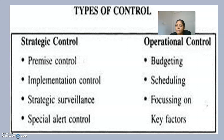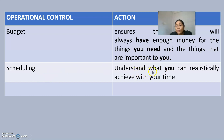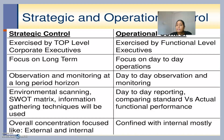At the operational level, control methods include budgeting and scheduling. Budgeting governs how resources are spent for smooth workflow within the organization, ensuring there is always enough money for important needs and helping strategic managers run the organization without delays due to financial deficiency. Scheduling control helps managers understand what can realistically be achieved within a given time. Together, these methods exercise control for strategic evaluation.